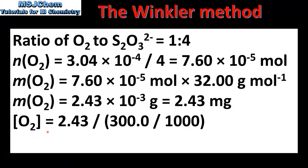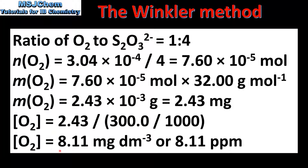To find the concentration of dissolved oxygen, we divide the mass in milligrams by the volume of the solution in dm³. This gives us a concentration of 8.11 mg per dm³. Since 1 mg per dm³ is equal to 1 ppm, we can express the concentration as either 8.11 mg per dm³ or 8.11 ppm.